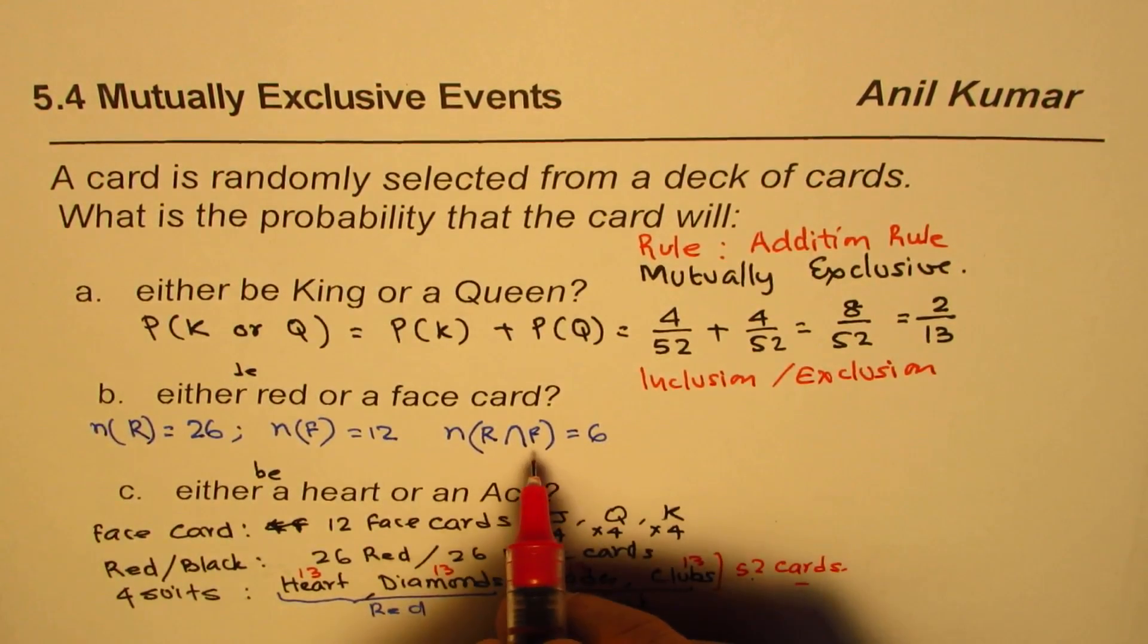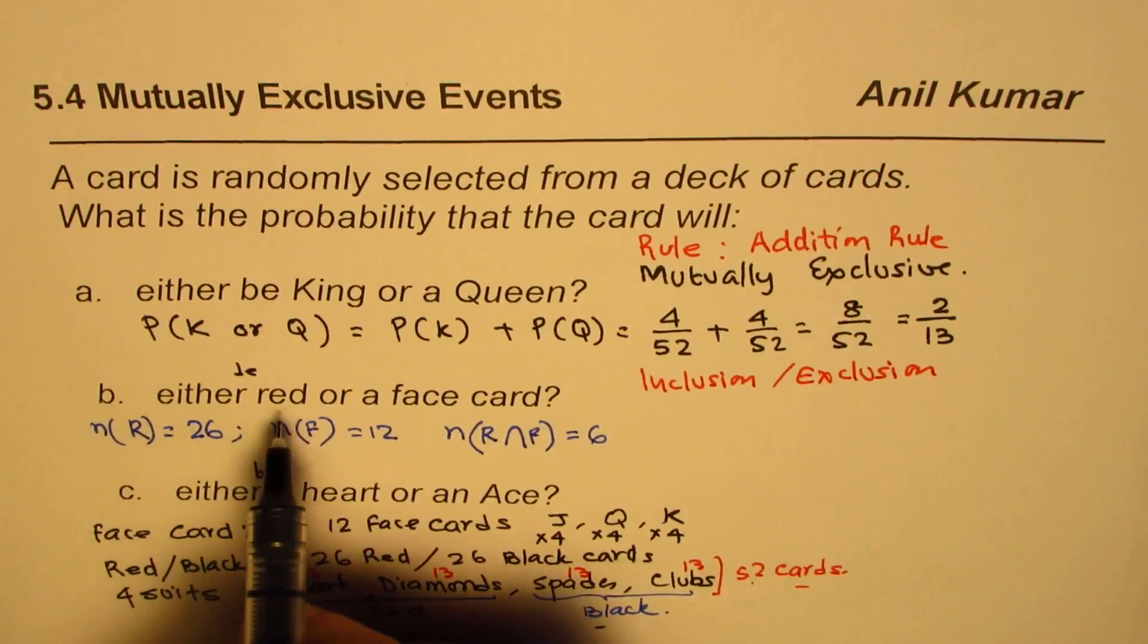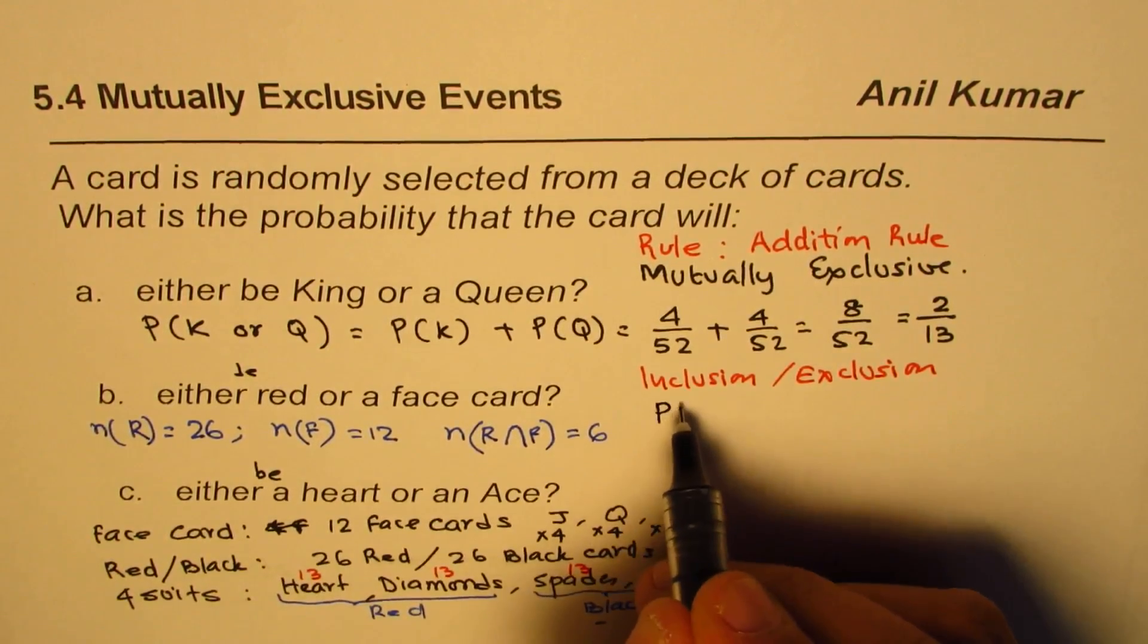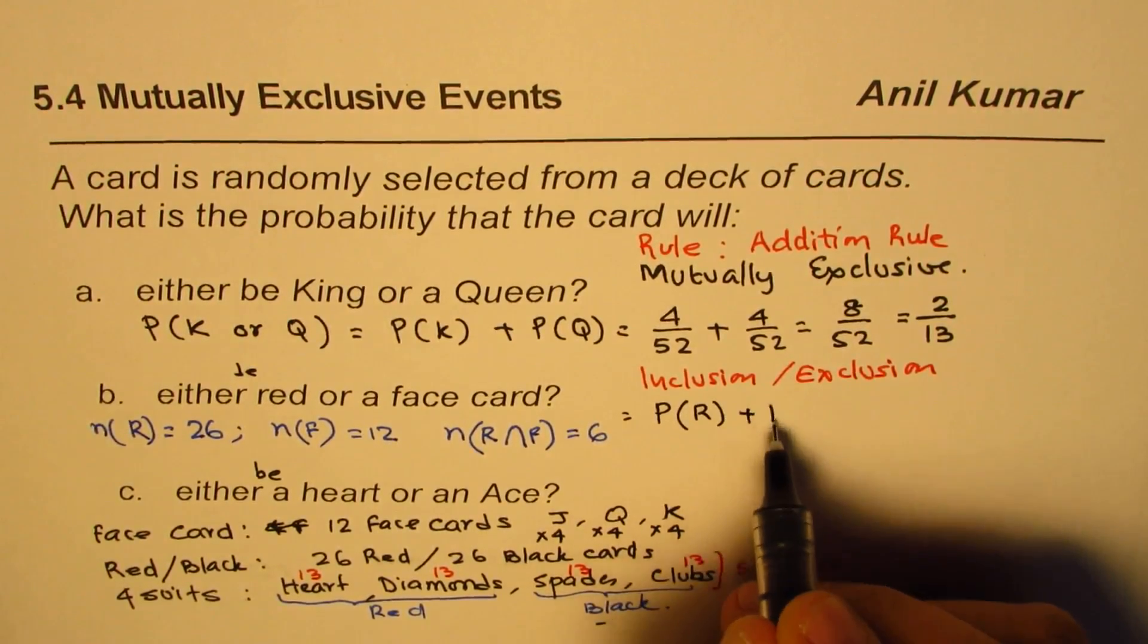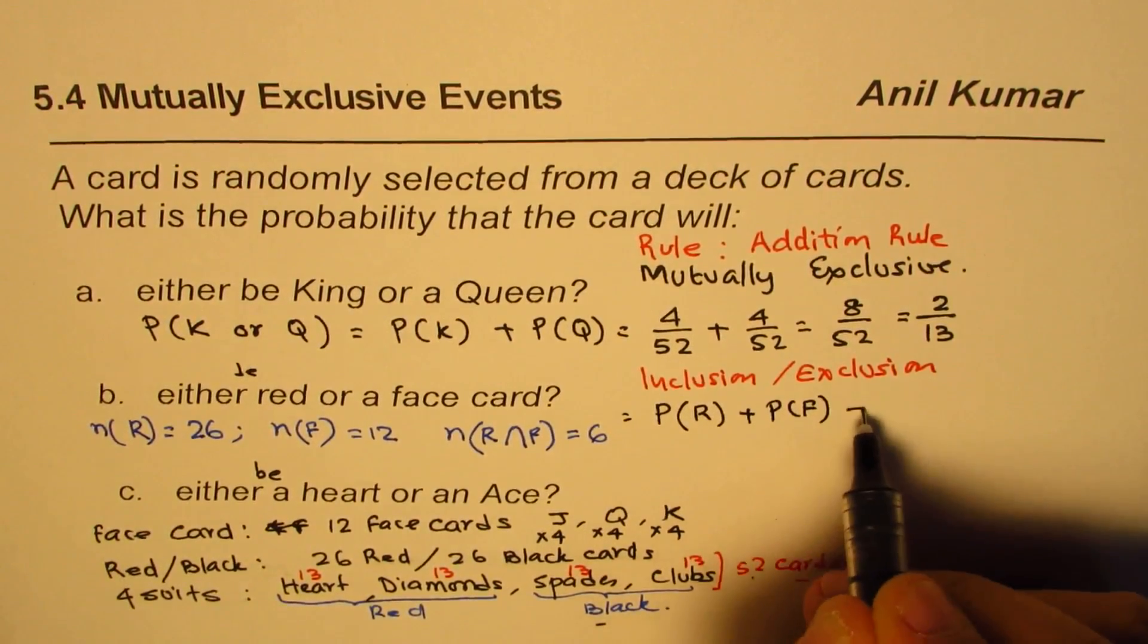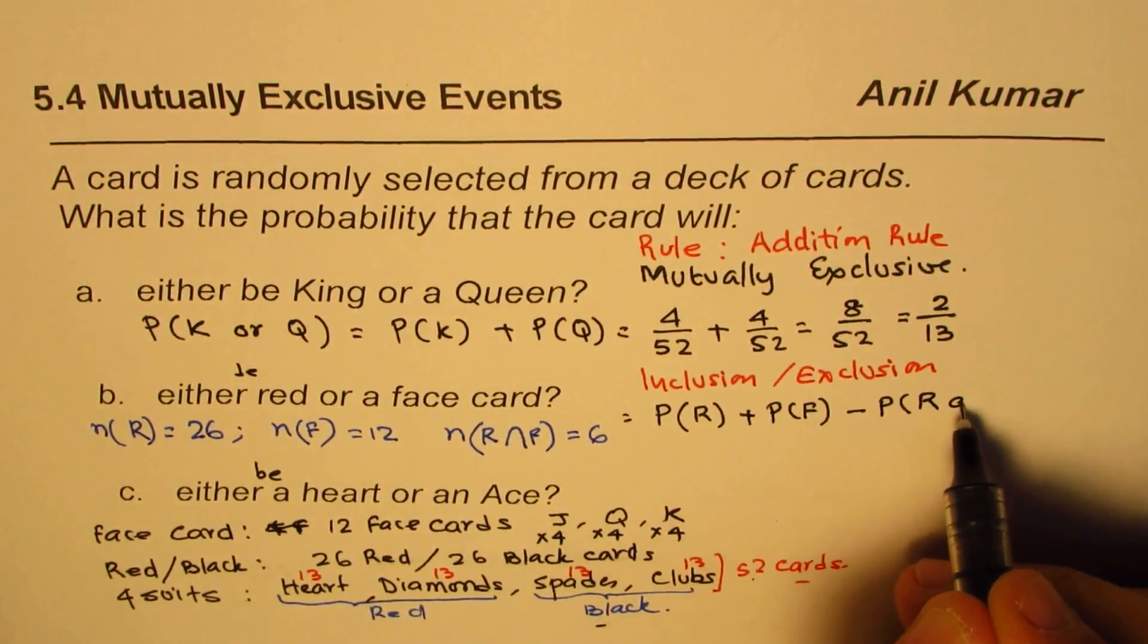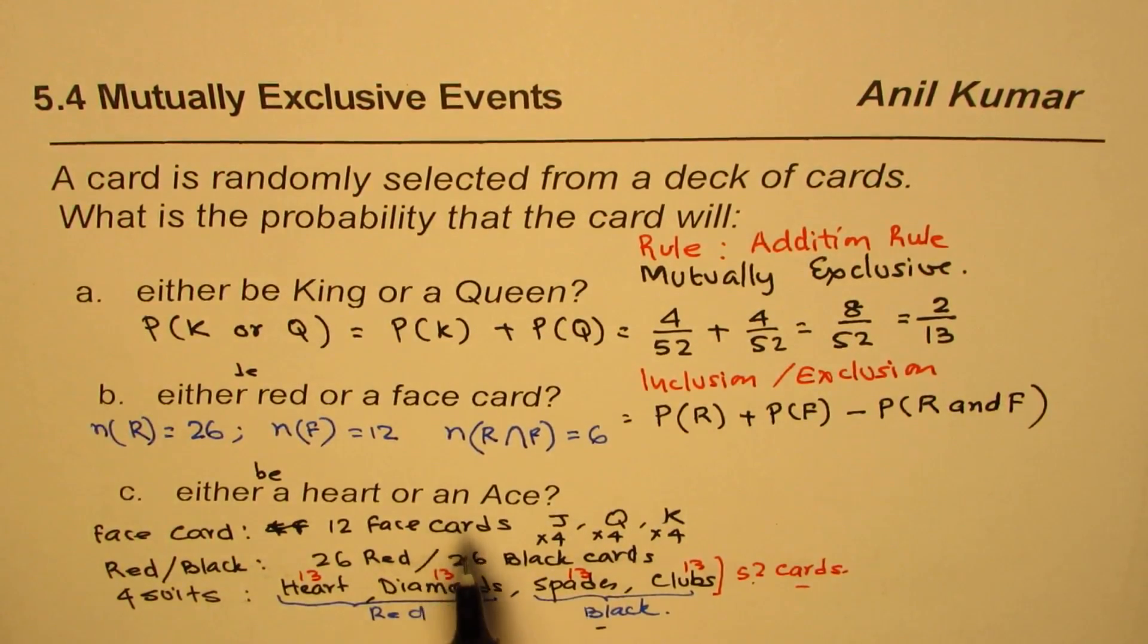Since there are common elements between the two, the probability of either red or face card will be probability of red card plus probability of face card, take away the probability of intersection of red and face cards.